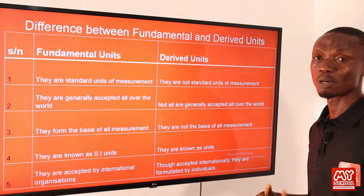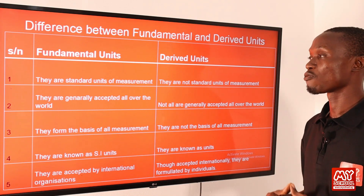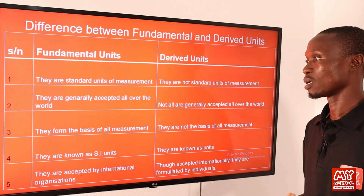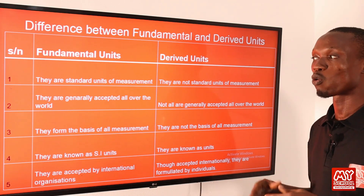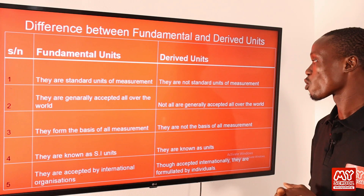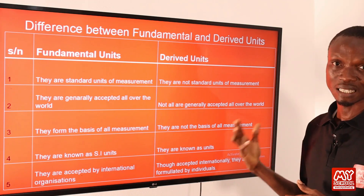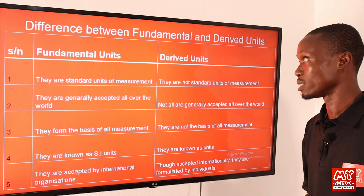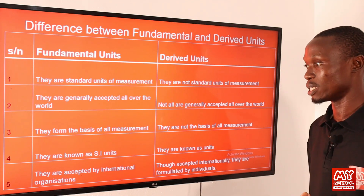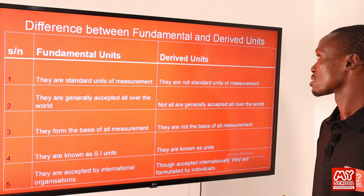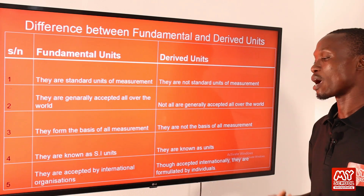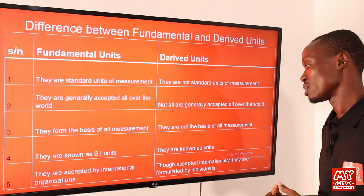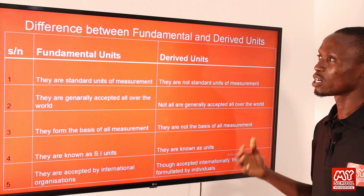Here we see the difference between fundamental units and derived units. The fundamental units are standard units of measurement, whereas the derived units are not standard units of measurement. The fundamental units are generally acceptable all over the world, whereas the derived units are not generally accepted all over the world. Thirdly, the fundamental units form the basis of all measurement, whereas the derived units are not the basis of all measurement. The fundamental units are also known as SI units, whereas the derived units are just known as units. Lastly, fundamental units are accepted by international organization, while the derived units, though accepted internationally, are formulated by individuals.